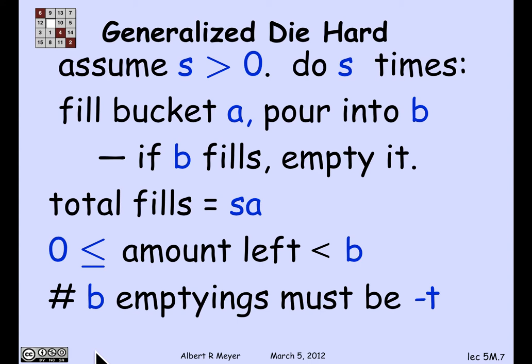The reason the number of emptyings has to be minus T: if there had been more than T emptyings, bucket B would have gone negative — there just isn't enough room for it. And if there had been fewer than T emptyings, the bucket would have held an amount larger than B. So the only possible number of emptyings of B is minus T. Remember, T is negative, so minus T is a positive number. That means we've put in SA and taken out TB, leaving exactly the linear combination SA minus TB.